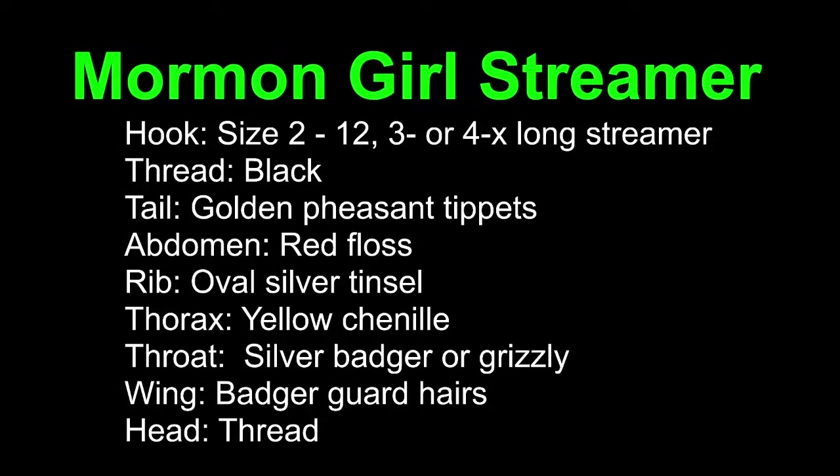That's the Mormon Girl streamer. Again, the same thing, streamer hooks, thread black. The tail is golden pheasant tippets. Abdomen, red floss. The rib is oval silver tinsel. Thorax, yellow chenille. Throat, silver badger or grizzly. Wing, badger guard's hair. And the head is thread.